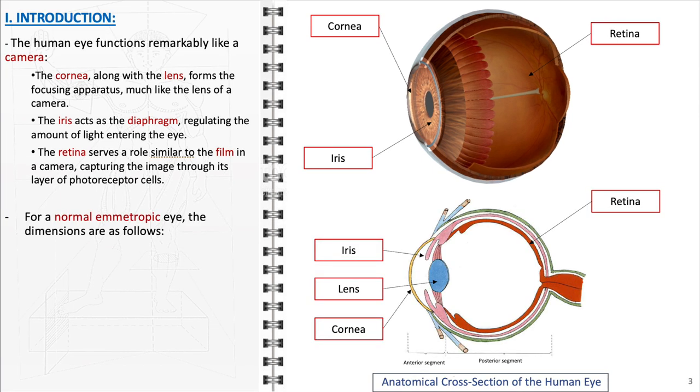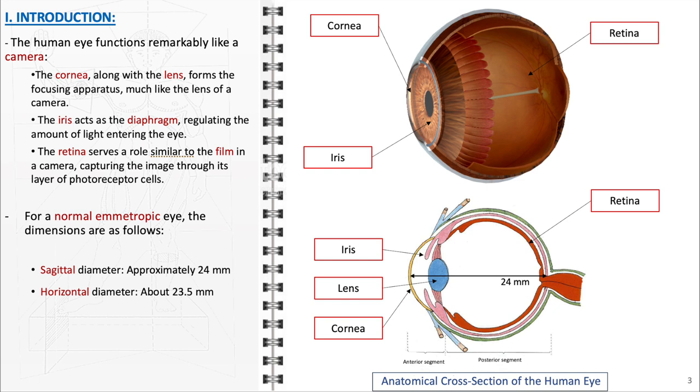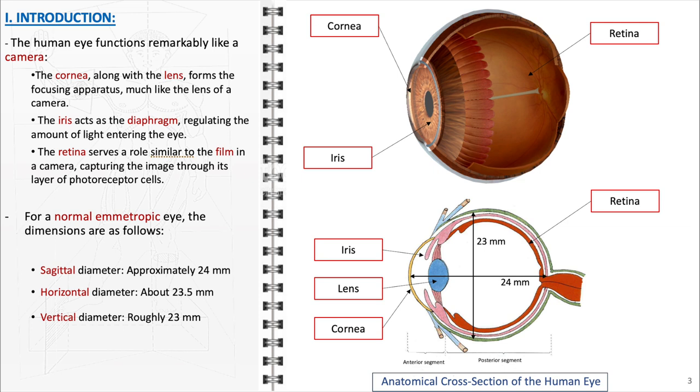For a normal emetropic eye, which means an eye with perfect vision without the need for corrective lenses, the dimensions are as follows: the sagittal, or anterior-posterior, diameter measures approximately 24 mm. The horizontal diameter, representing the width of the eye, is about 23.5 mm. The vertical diameter, or the height of the eye, is roughly 23 mm.